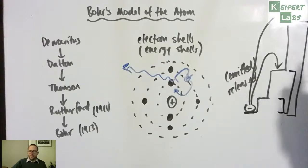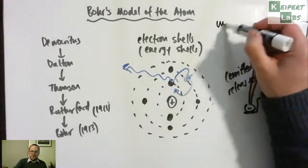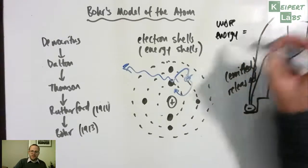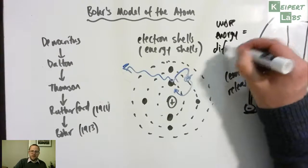And then what that means is that the bigger the jump that we make, the more energy that's involved, the different colour that we get of light when it drops back down. So more energy equals different colour.